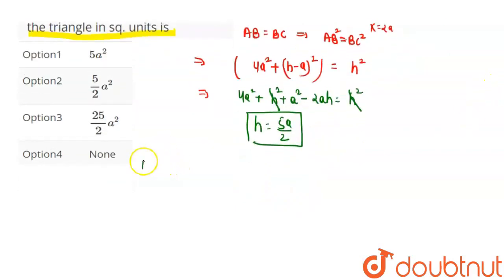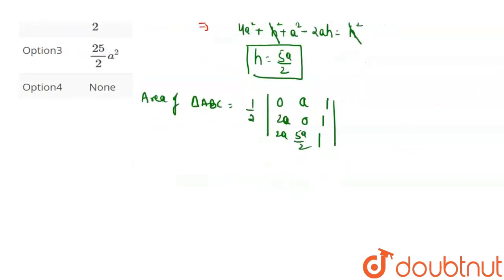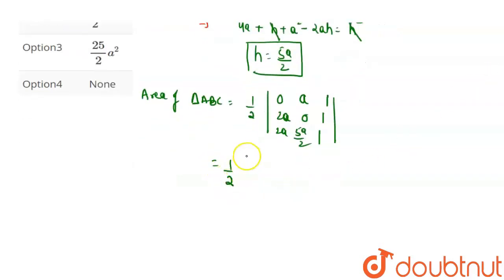Now I need to find out the area. Area of triangle ABC equals one by two, putting the coordinates: (0, a), (2a, 0), (2a, 5a/2), which equals one by two, bracket 0 minus a, 2a minus 2a plus 1 into 2a into 5a/2 minus 0.